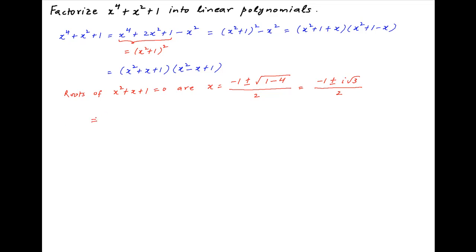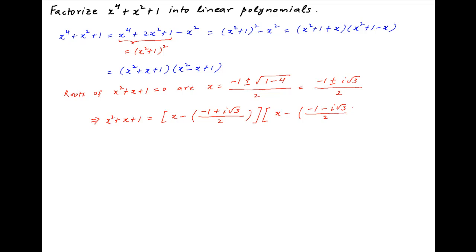Therefore, x squared plus x plus 1 can be factorized into (x minus (minus 1 plus i times root 3 upon 2)) multiplied by (x minus (minus 1 minus i root 3 upon 2)).